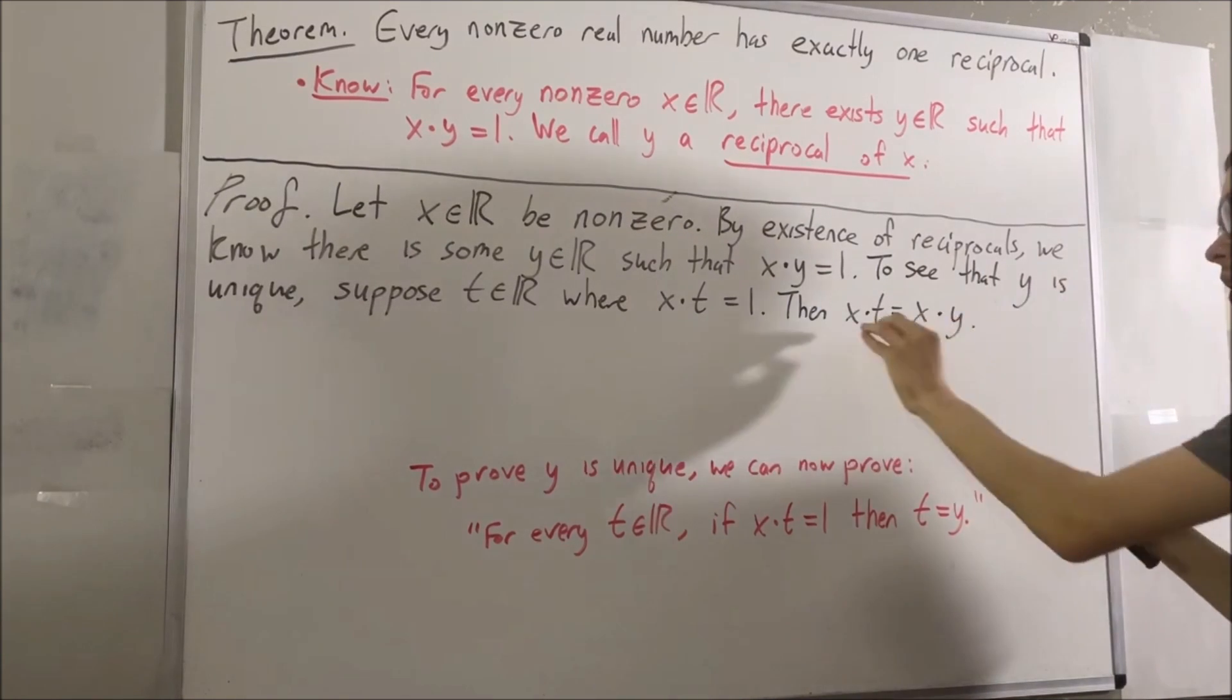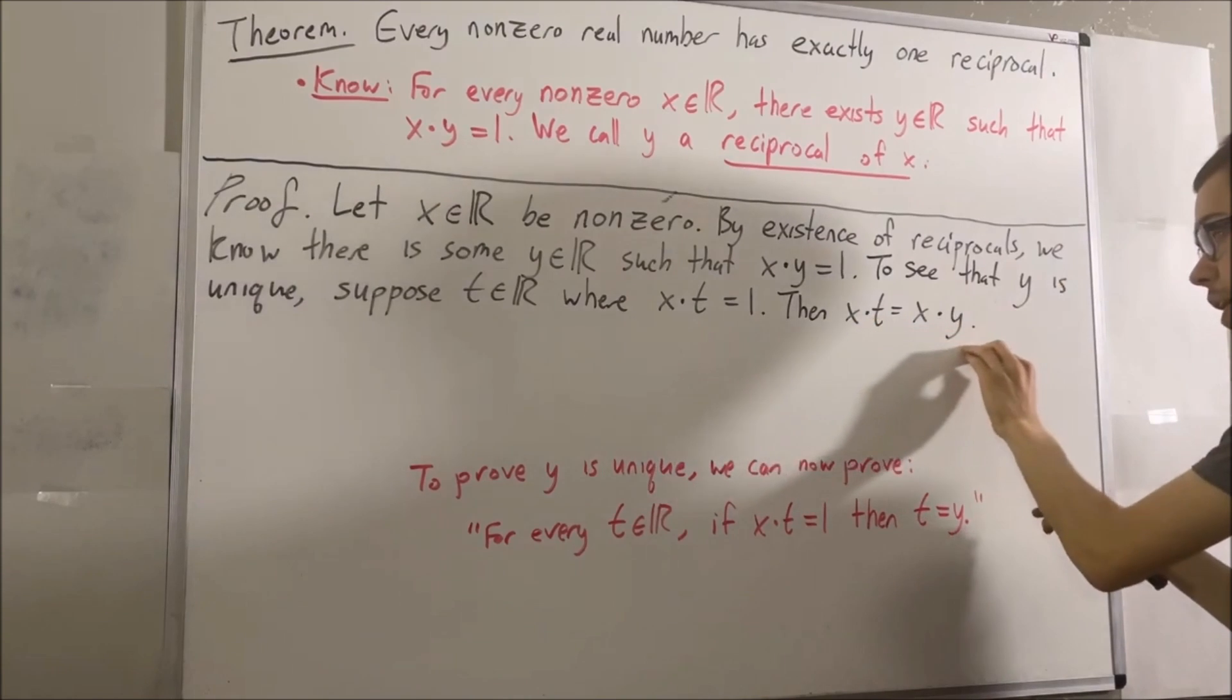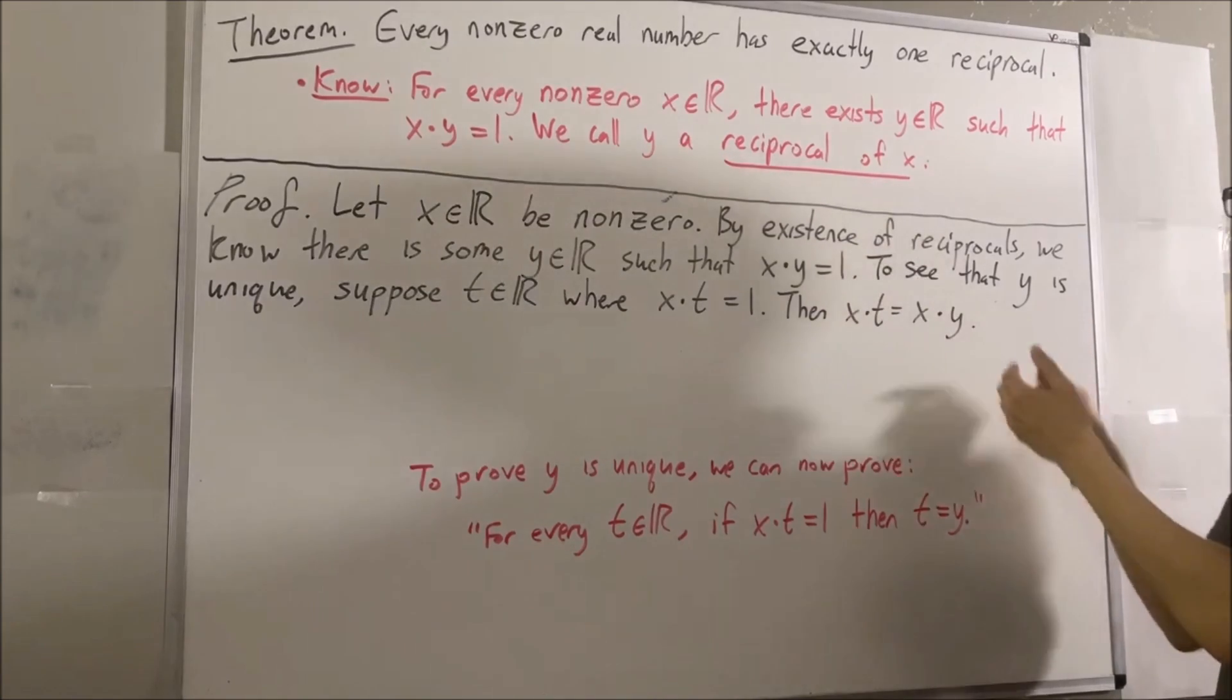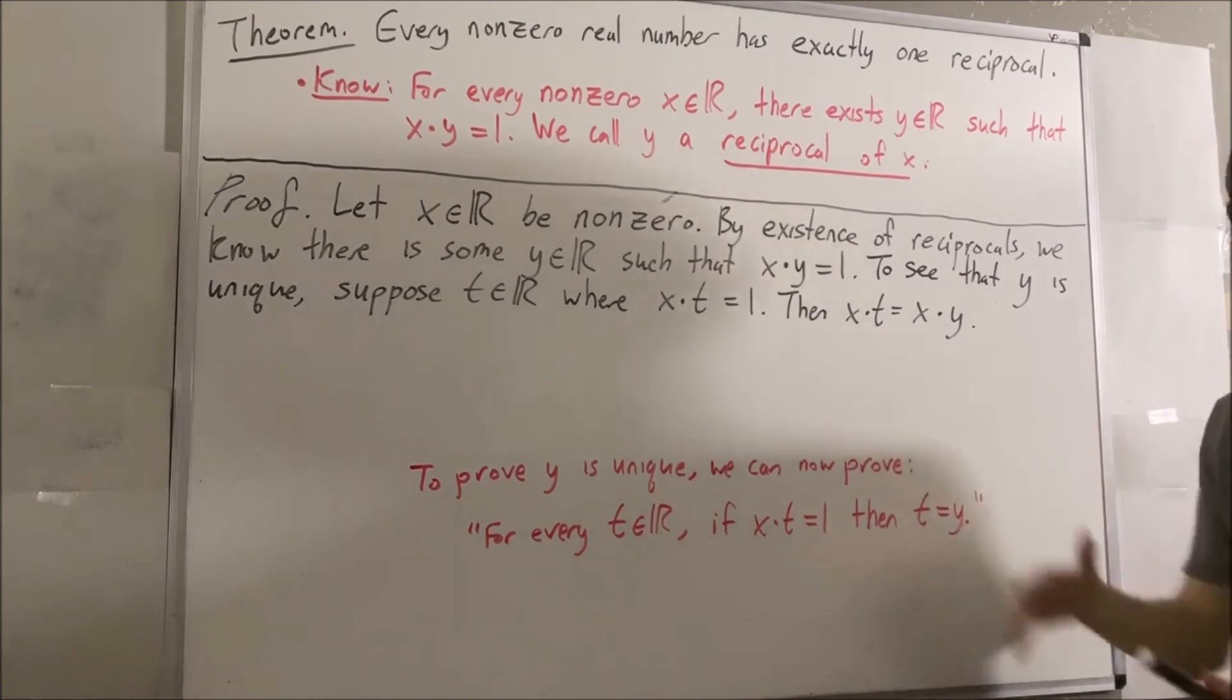But really, to say that x times t equals x times y implies t equals y is what's referred to as the cancellation law of multiplication. So that's going to be our justification for this step.